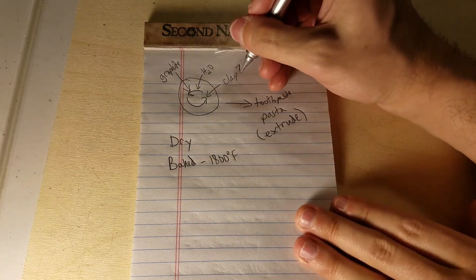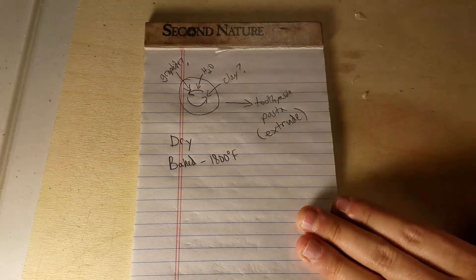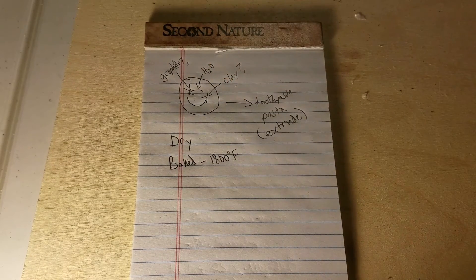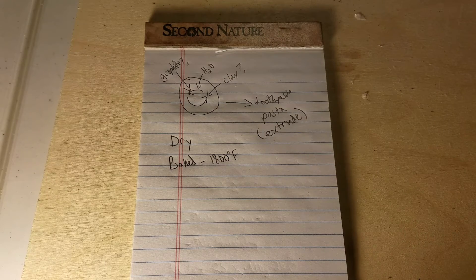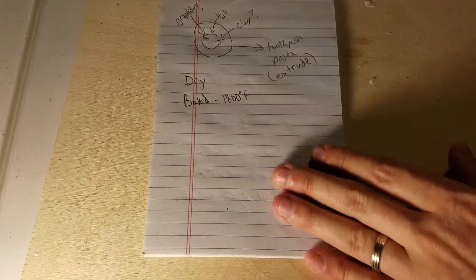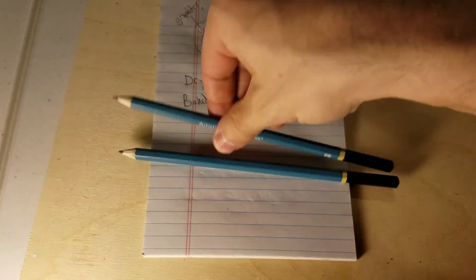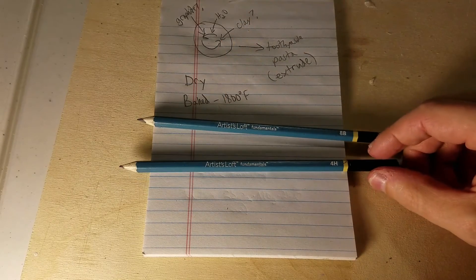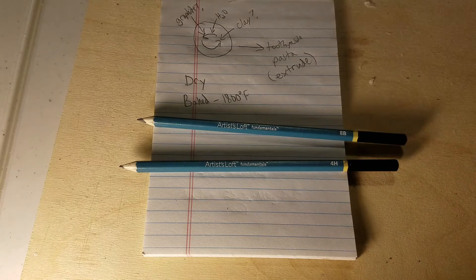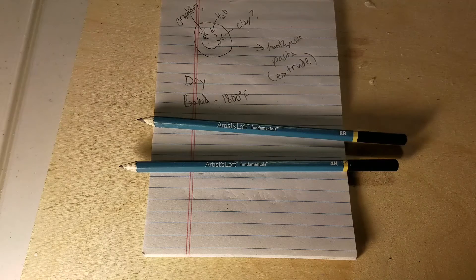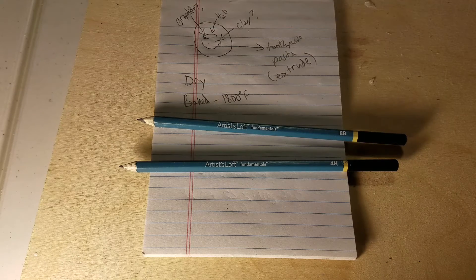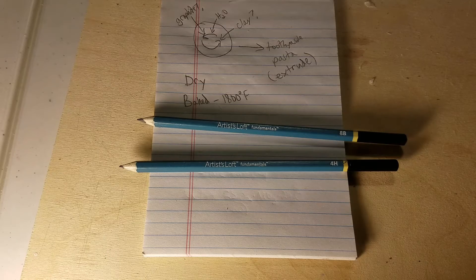Depending upon how much clay and how much graphite you throw into the mix, that's going to influence the characteristic of your pencil lead. And so to sort of test that out, I have two pencils here, both Artisloth pencils, one in 8B and 4H. And I've talked in my mechanical pencil lead test video before about the difference between these different grades.